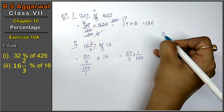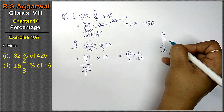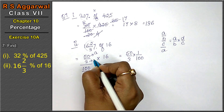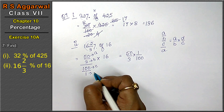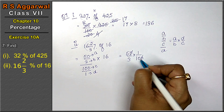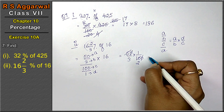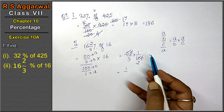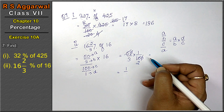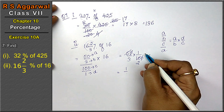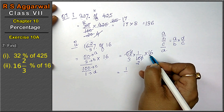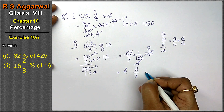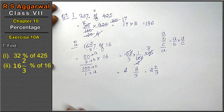Why? Because as I explained, anything in the form A upon B upon C upon D can be written as A upon B into D upon C. Here A is 50, B is 3, C is 100, and D is 1. Now, the zeros will get cancelled. We also multiply by 16: 2×1 is 2, 2×8 is 16. So we get 8 upon 3. This can be written as 2 whole 2 upon 3, which is the answer.